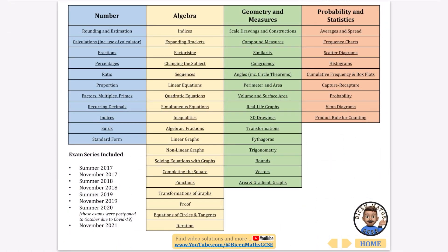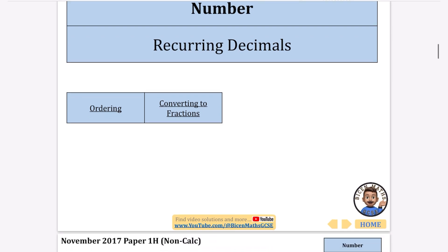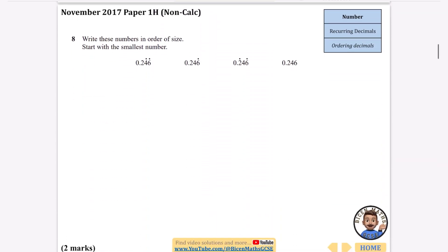Okay, so we're continuing with the series of every question that has ever been asked and we're going to be looking today at recurring decimals. If you want to download this, it's linked in the description and it's fully hyperlinked with all the questions up to November 2021. We'll look at recurring decimals, do one question on ordering, and then the rest about converting them to fractions.